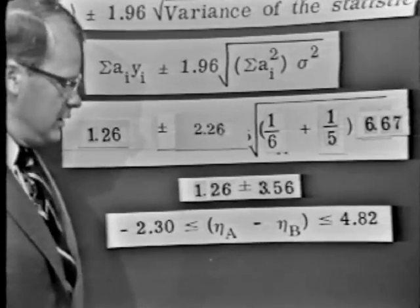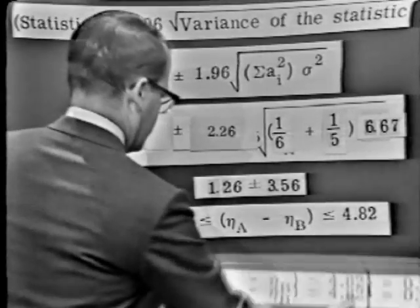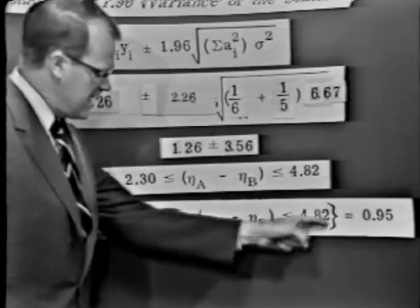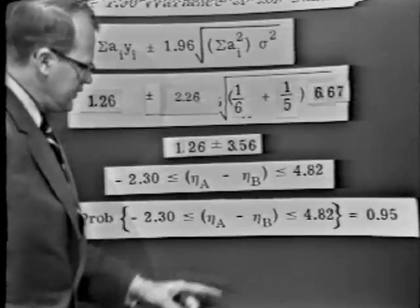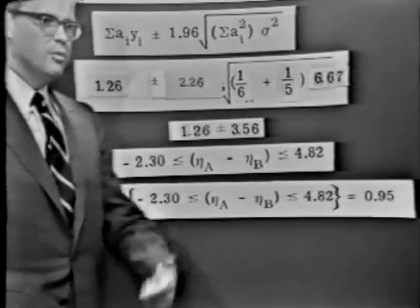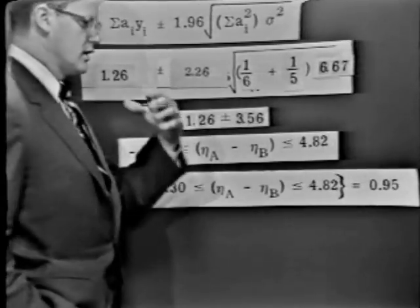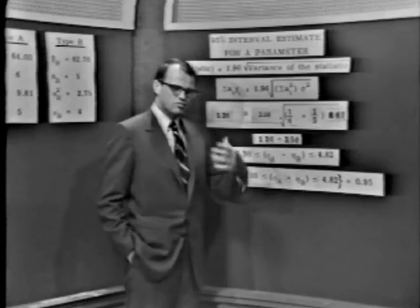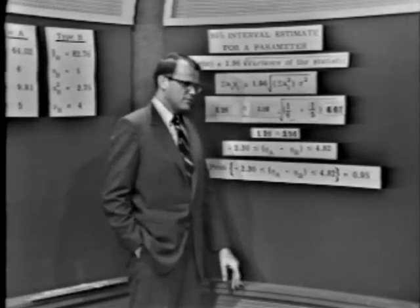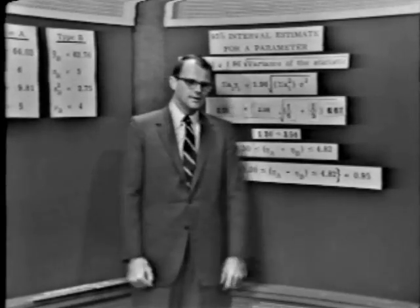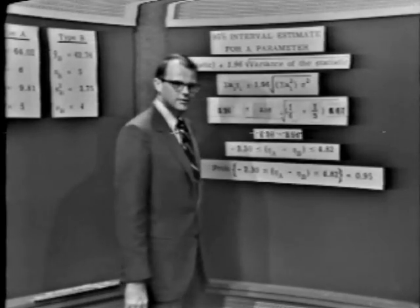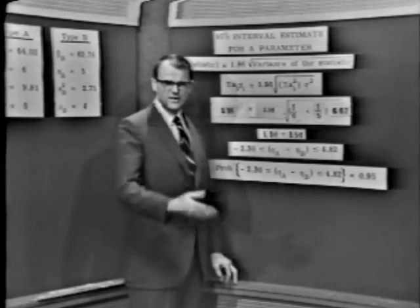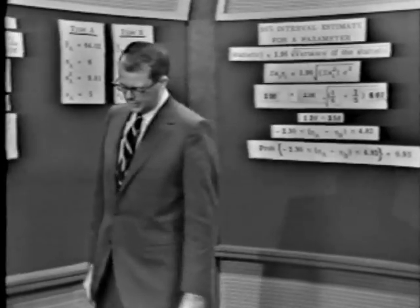We could view this statement more legalistically: the probability of this statement being correct is 95%. That is to say, 5% of the time when we make such a statement, we will be incorrect. It's possible that an engineer constructs such an interval and it does not include eta A minus eta B. But the nice thing about 5% is that's a rare event — something that happens with a frequency of 5% or less. Rare events happen rarely, and so we have a mechanism all engineers can put to resourceful use.